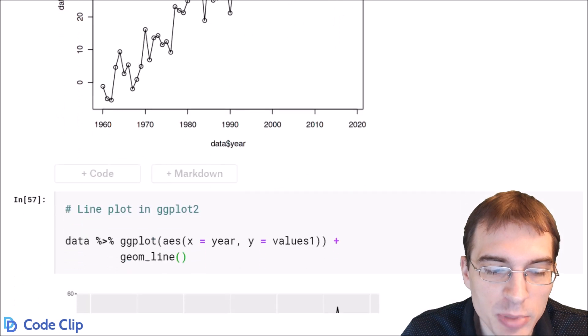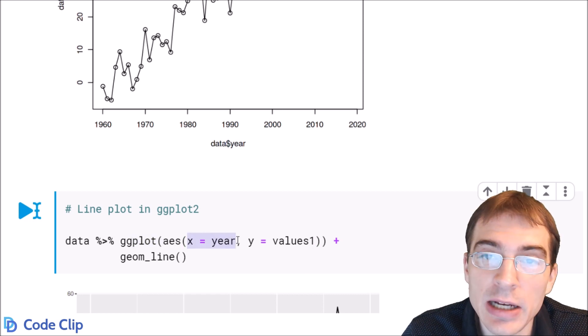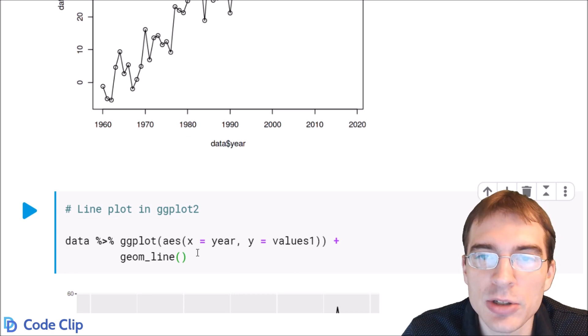Now we can make essentially the same plot in ggplot2 by taking the data piping it to ggplot. Again we want year on the x-axis, the values on the y, and we're going to use geom_line to create the line plot.